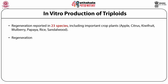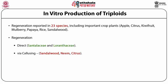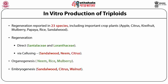Regeneration from the endosperm in the families Santalaceae and Lauraceae occurs directly from the endosperm. But in the case of sandalwood, neem, and citrus, the endosperm first forms a callus and then differentiates plants. So you have two pathways of regeneration of plants from endosperm — one is direct regeneration, and the other is after callus. And even from callus, when put on another suitable medium, regeneration is either by organogenesis or by embryogenesis. Embryogenesis has been reported in sandalwood, citrus, and walnut. Organogenic differentiation from the callus occurs in neem, rice, and mulberry.